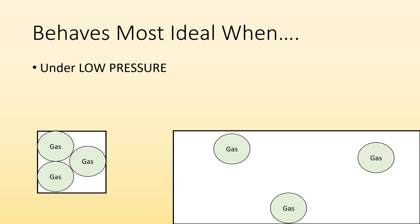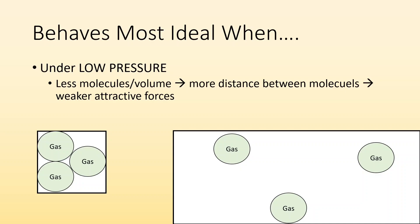They also behave most ideally when they're under low pressure because of attractive forces. If there's less molecules per volume, there's more distance between the molecules, which means the attractive forces are weaker. The attraction between gas particles that are touching each other, super strong compared to what is that attraction over all of this distance. High pressure, less ideal. Low pressure, more ideal.